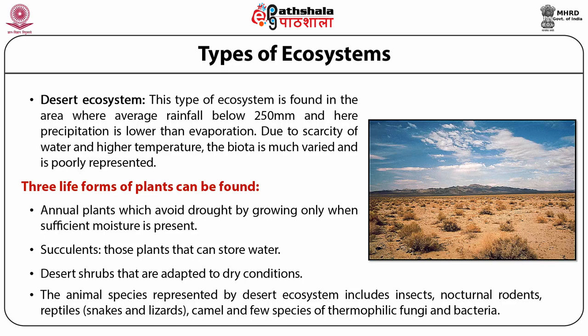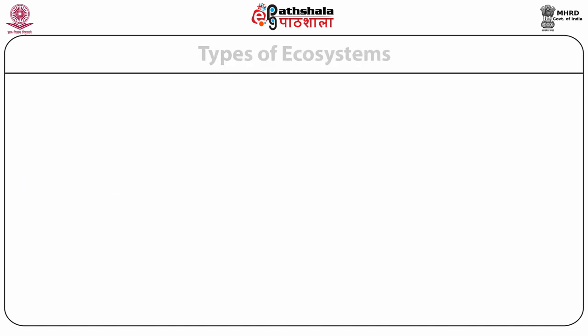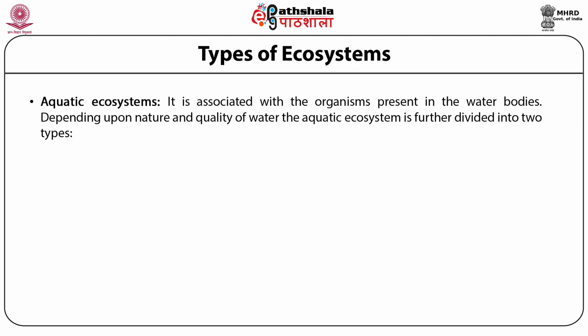Camel and few species of thermophilic fungi and bacteria are also found in the desert. Aquatic ecosystems are associated with organisms present in water bodies. They have the same basic requirements as needed by terrestrial organisms for the process of growth, development, and reproduction. The difference is the form in which resources are available — carbon dioxide and oxygen are present as gaseous state in terrestrial ecosystems, whereas in aquatic ecosystems they are present as dissolved forms. Depending upon the nature and quality of water, the aquatic ecosystem is further divided into two types.